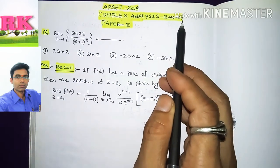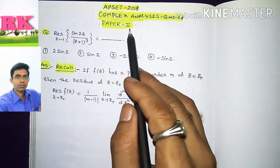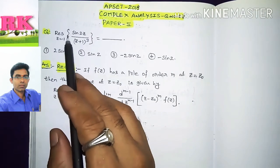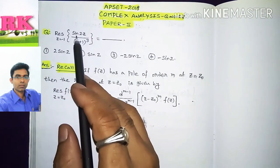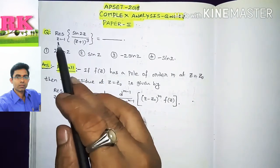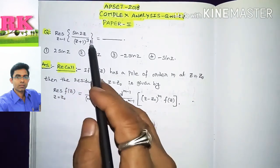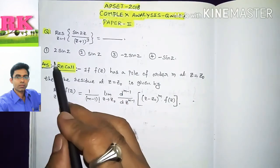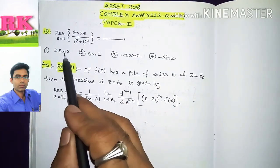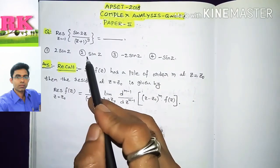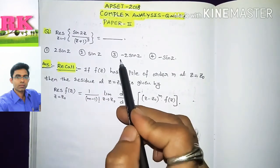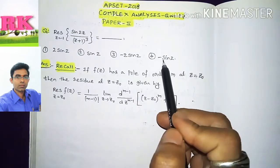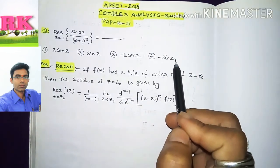Question number 27 from PAPA 2: find the residue of sin(2Z) / (Z+1)³ at Z = −1. The four options are: option 1: 2sin2, option 2: sin2, option 3: −2sin2, option 4: −sin2.